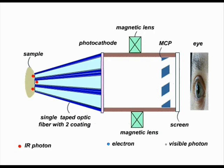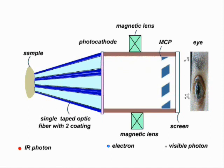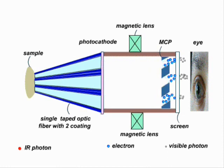The following slide shows the simplified animation sketch of the contact field optical microscope. The small red ball represents the infrared photons from the sample, the blue ball represents the photoelectrons induced by infrared photons from the photocathode, and the white ball represents the visible light induced by electrons from the phosphor screen. An electron entering the micro channel plate is multiplied tens of thousands of times. The bombardment of thousands of electrons on the phosphor screen produces a large amount of visible light photons.